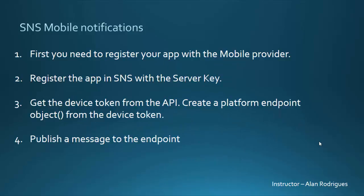The overall steps are: first, register your mobile app with the mobile provider, which gives you a server and API key. You then register that key with SNS in the AWS console. Next, create a platform endpoint — that endpoint represents your device. When you implement the API in your mobile app, you get a device token, which you upload to the AWS console or use programmatically to create the platform endpoint object. SNS can then publish a message to this endpoint.